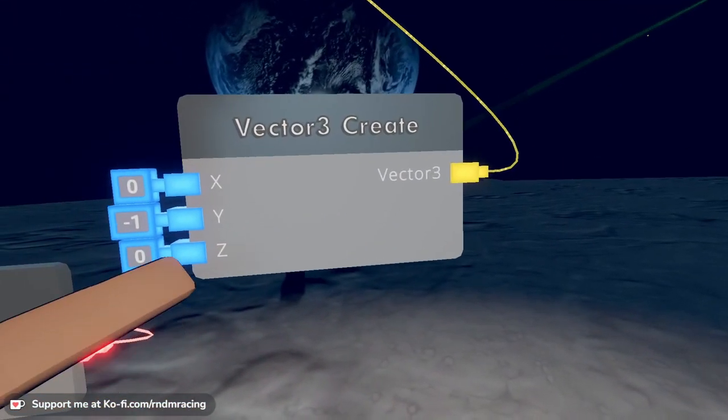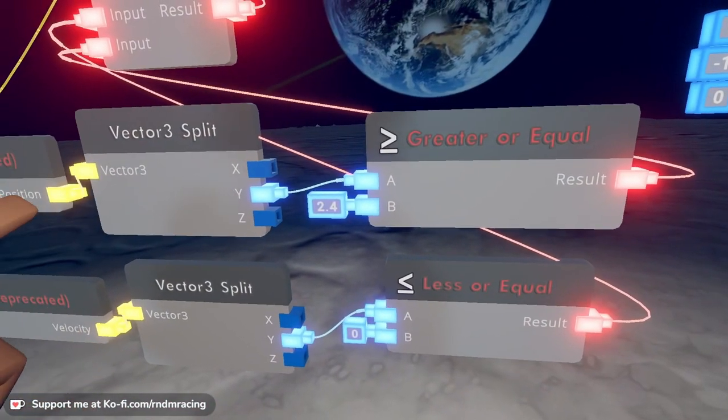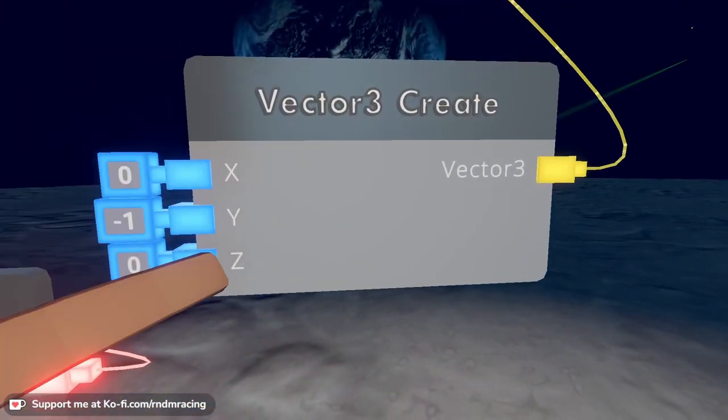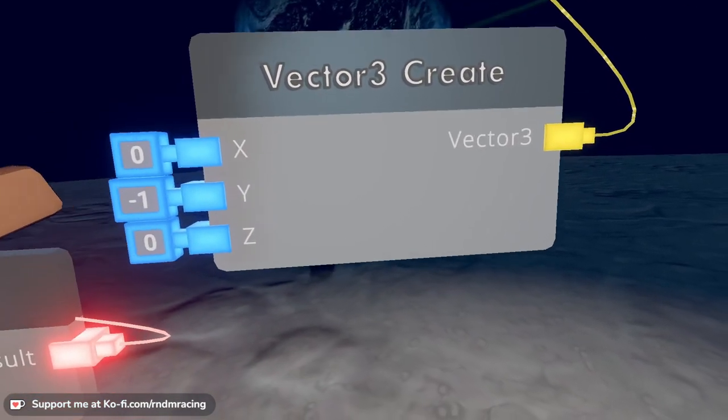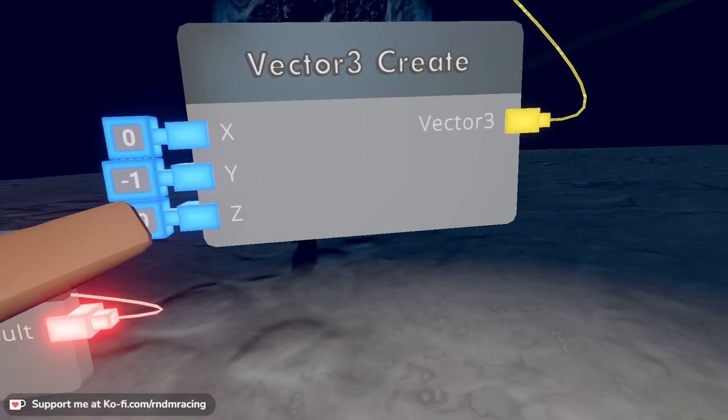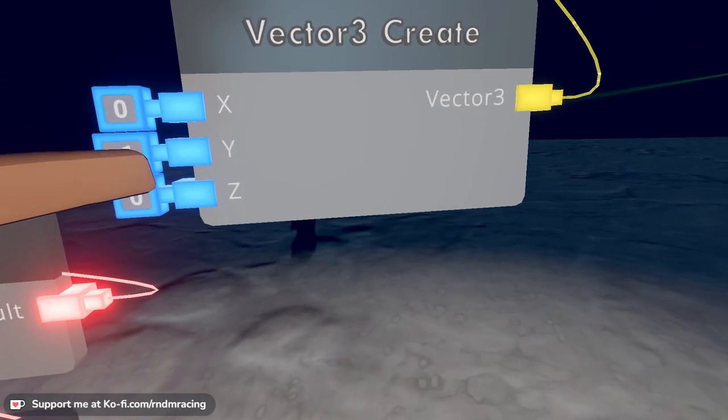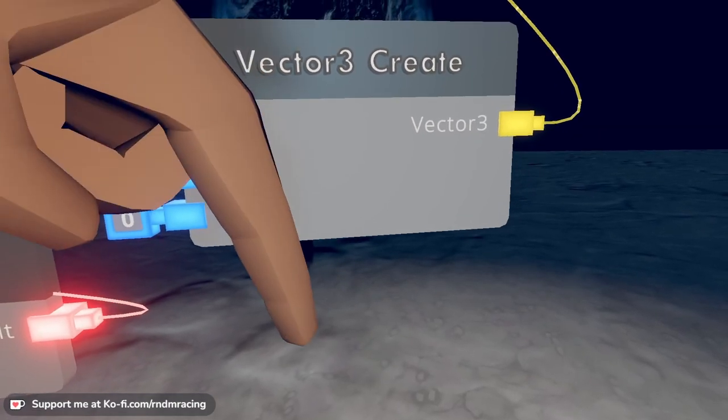So we want this Vector to Create. It's different than the Split. Remember the Split gives you a vector from something. Vector to Create lets you create a vector from nothing. It's just a coordinate, so it's like a point in space. But this time we're not using it as a point in space, we're using it as a direction, right? Because we have a Y of minus one, that means we're going down. That's a minus Y, minus one on the Y.